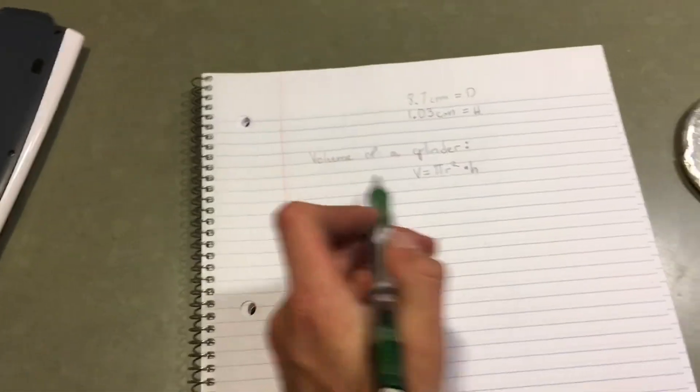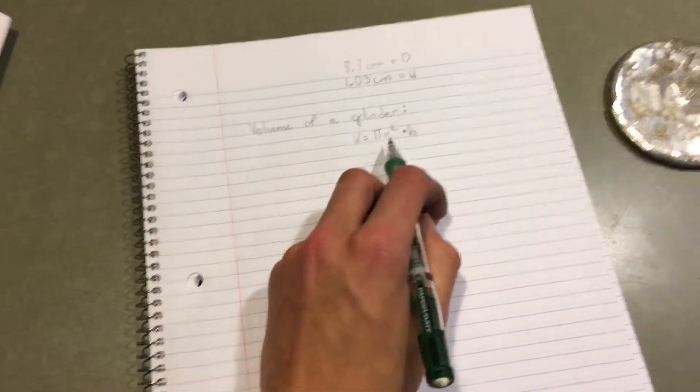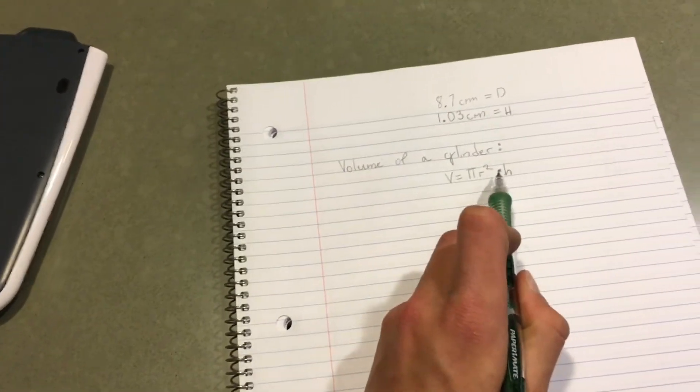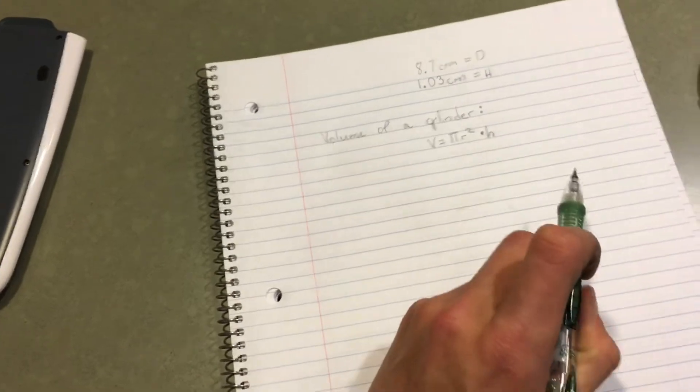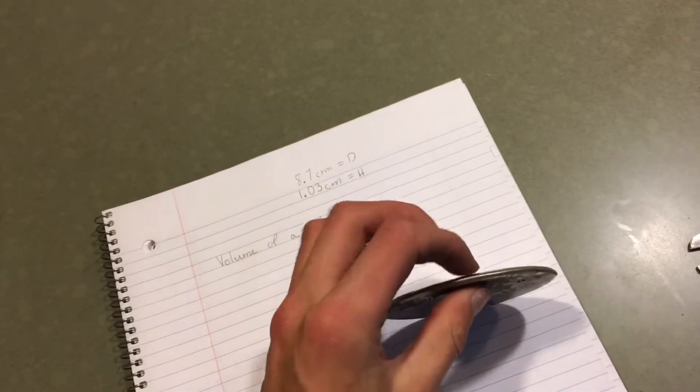The formula for volume of a cylinder, which this is, is volume equals r squared times pi times your height. The height would be the distance between the two bases.